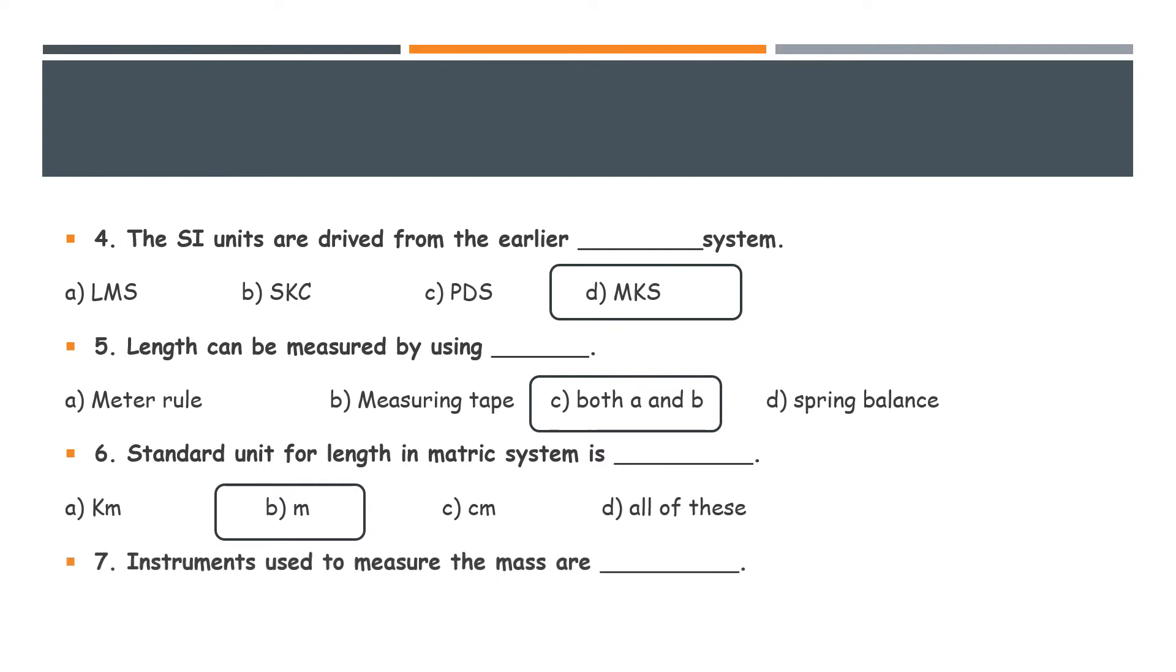Next MCQ is instruments used to measure the mass are. Here we have option: top pan balance, electronic balance, spring balance. And we know that the answer is all of these. Because all of these three instruments are used to measure mass.